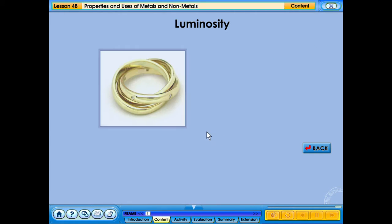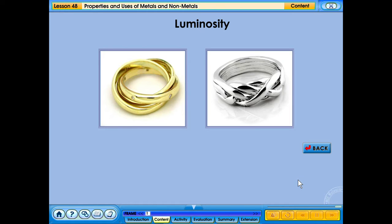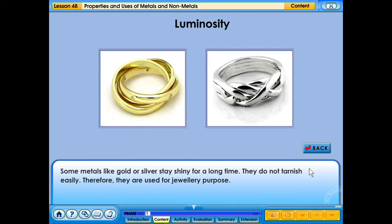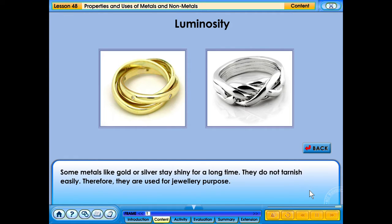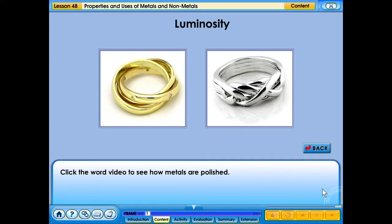Luminosity. All metals are shiny in appearance, especially when freshly cut or polished. Some metals, like gold or silver, stay shiny for a long time. They do not tarnish easily. Therefore, they are used for jewelry purposes. Click the word video to see how metals are polished.